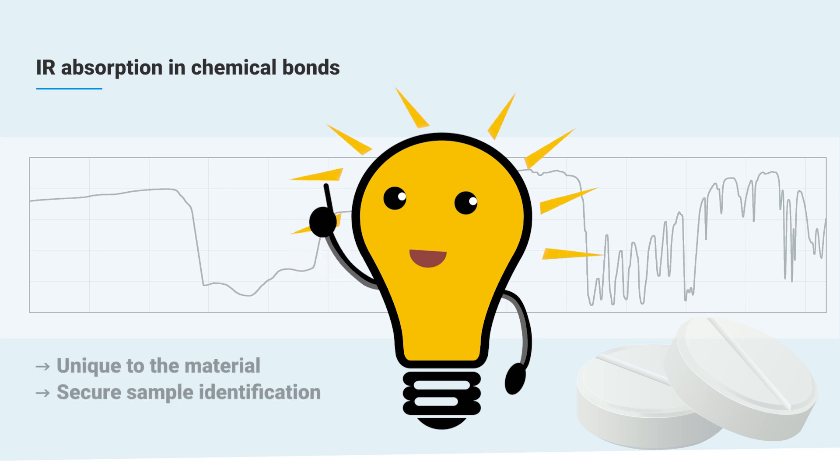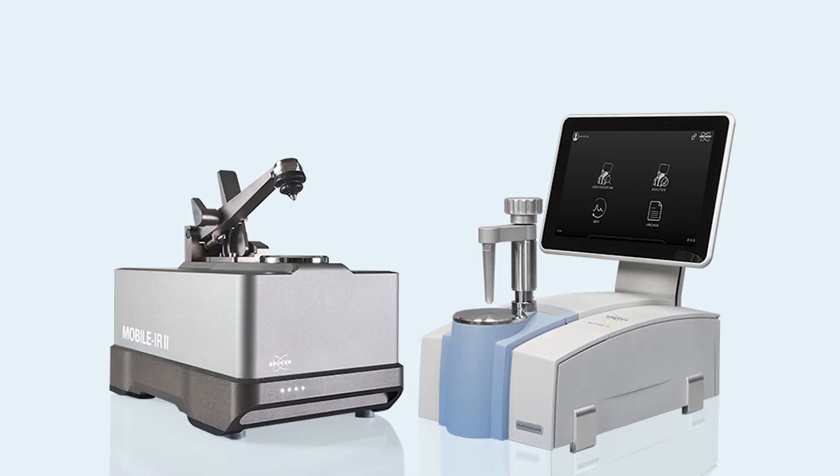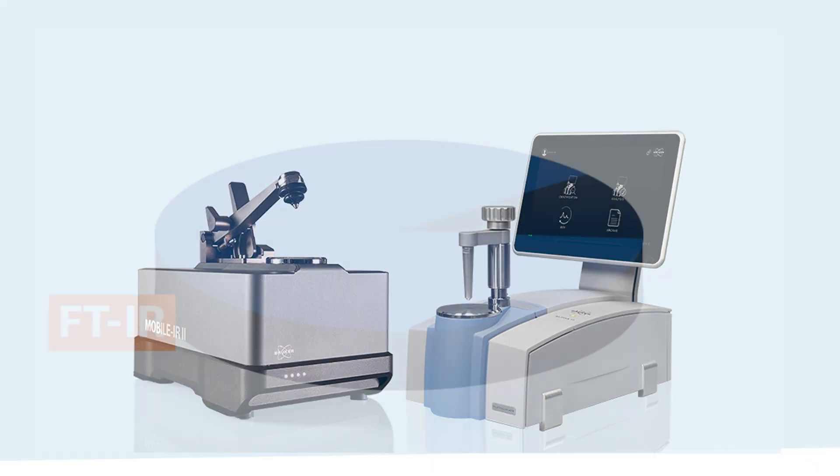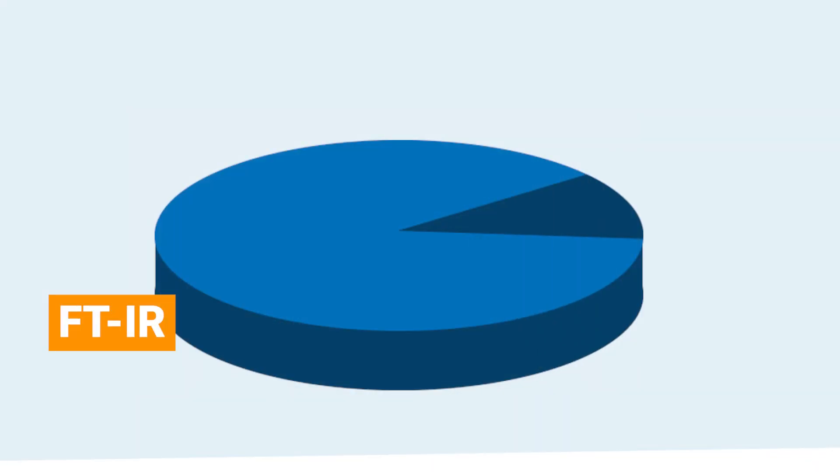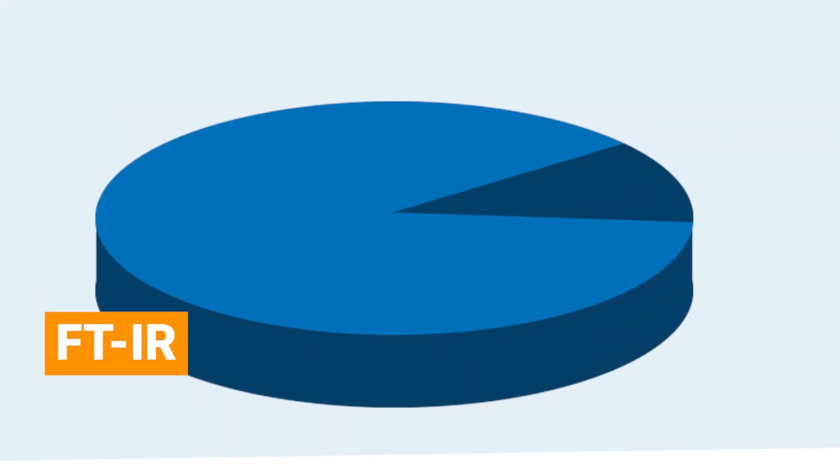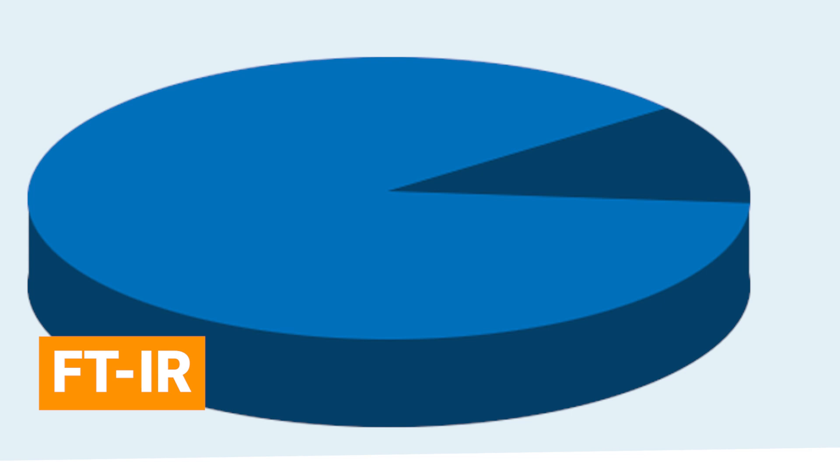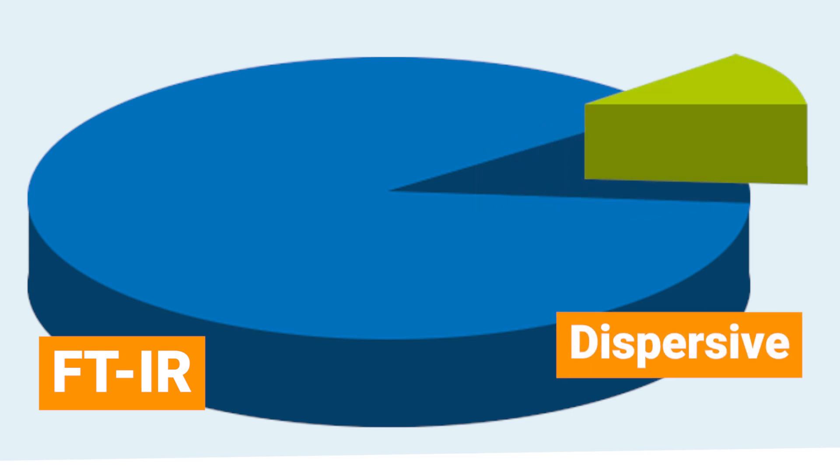But if you want to know the specifics, for example how spectrum is generated, you must look at the spectrometer. Although today FTIR technology dominates the market, it is imperative to start by explaining the works of a dispersive IR spectrometer.